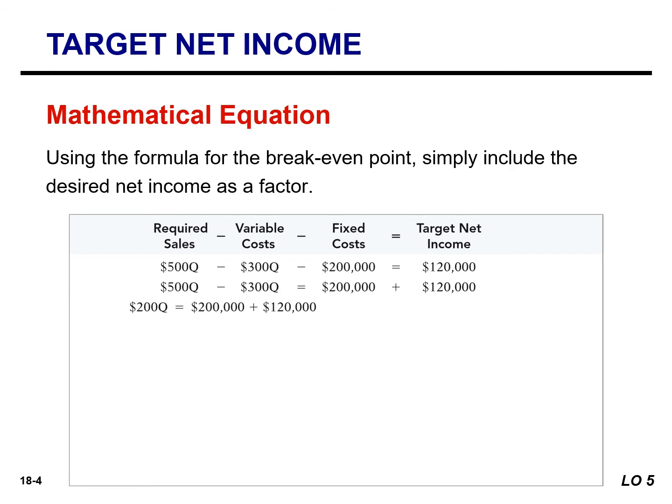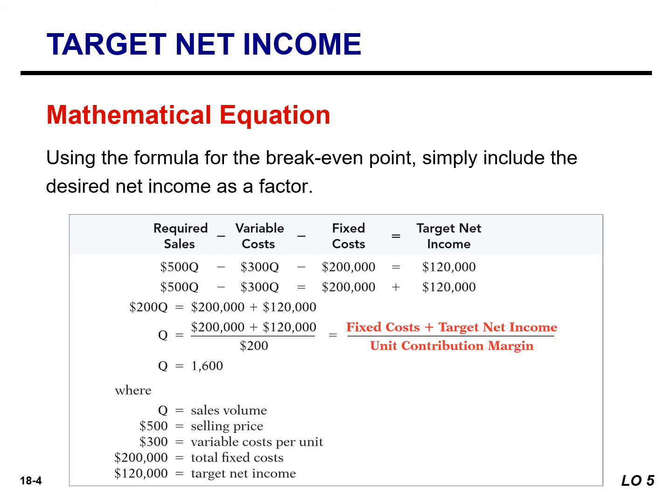Assuming that target net income is $120,000 for Vargo, required sales in units is 1,600. Vargo must sell 1,600 units to achieve target net income of $120,000. If it wanted to find the sales dollars required to achieve the target net income, you simply multiply the units sold by the unit selling price. So, 1,600 units multiplied by $500 gives you $800,000.